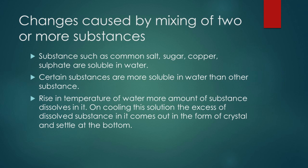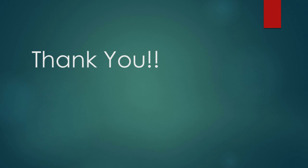Another example is white washing — when quick lime is mixed with water, it is converted into slaked lime. This is a chemical change and an irreversible change. So this is how changes occur around us. We have discussed the full chapter and now the question and answer portion will be discussed. Thank you.